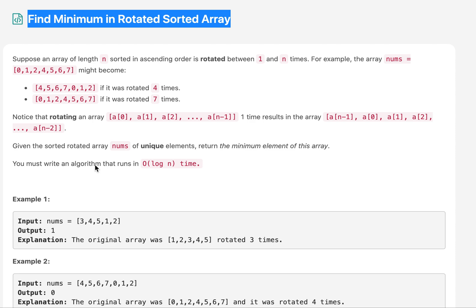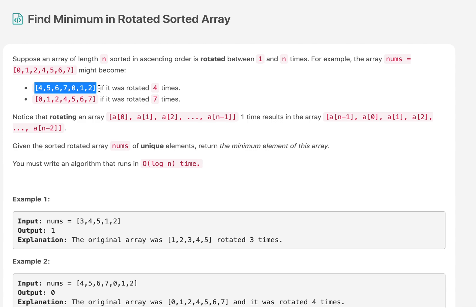We need to write the algorithm in O(log n) time, because in O(n) time it's pretty straightforward — you iterate through the complete array and find the minimum element, but you are not using the property that the array is sorted and rotated.